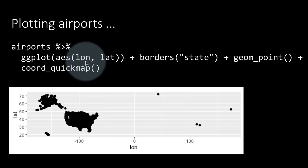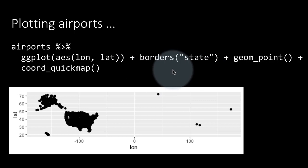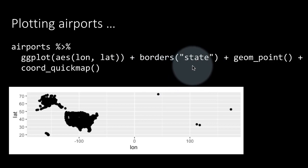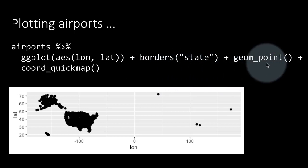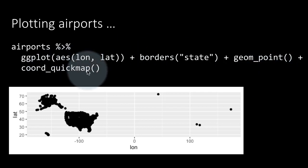So we are saying ggplot, aesthetic, longitude, latitude, x-axis has the longitude, y-axis has the latitude and put a map of the United States showing the borders of every state. Plot each latitude, longitude combination as a point and put it all on a map with the coord_quickmap function.